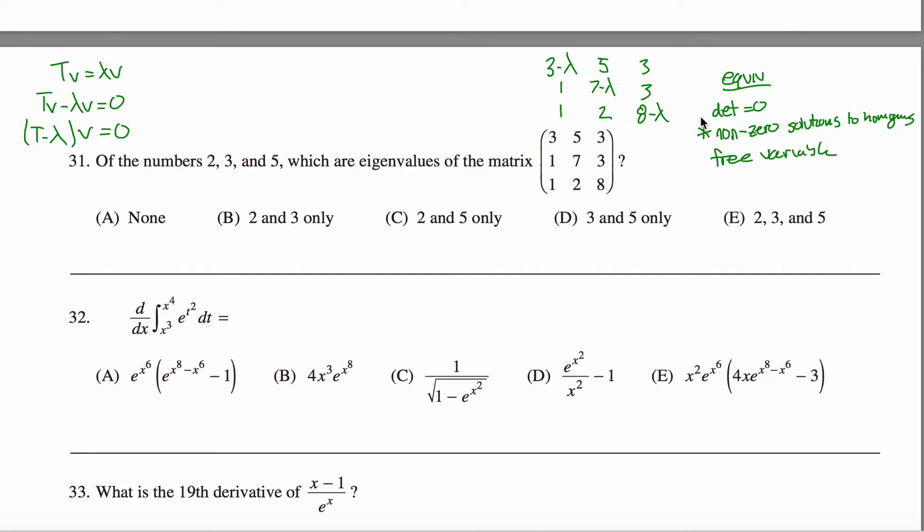And the easiest way to figure that out is by using one of these two options. If this problem just said find the eigenvalues and then gave you five different options, you might want to use this first option, figure out the determinant of this guy. If you can make this matrix have a determinant of 0...